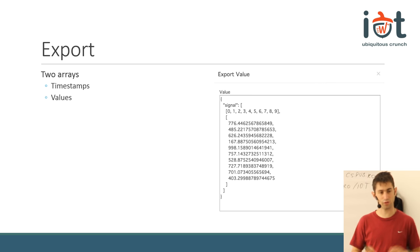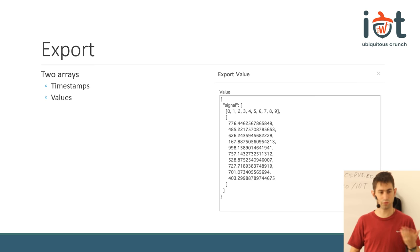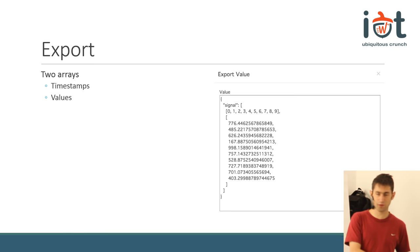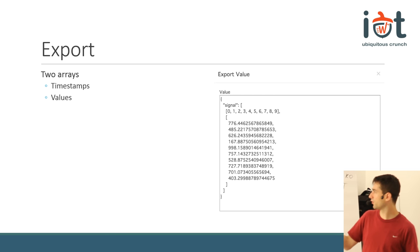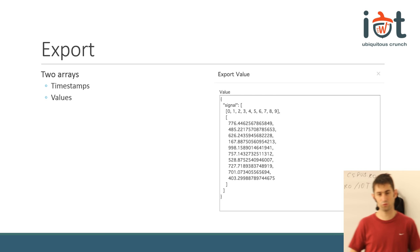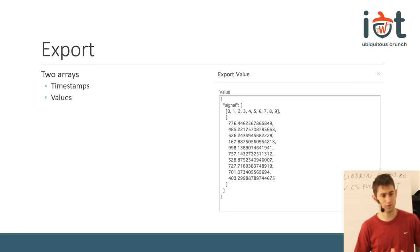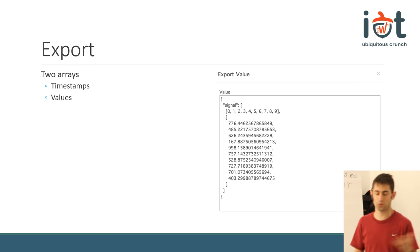Another important feature is that you can export the signal that you sample with the dashboard. You have a small menu next to the widgets where you can select the export value. For each signal that you have on a graph, it's going to send you two arrays: one is the timestamp array (or the X array, depending on the type of graph), and the other is an array with the values. This will be very useful for signal processing.